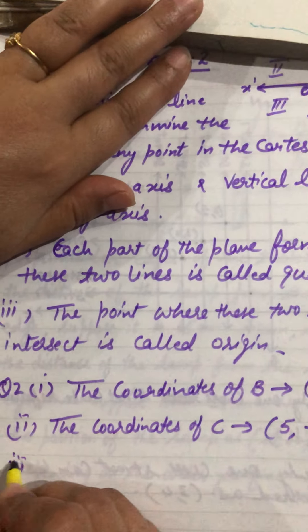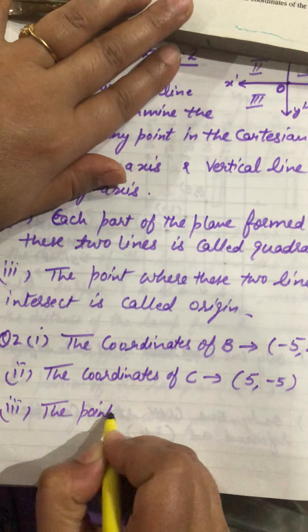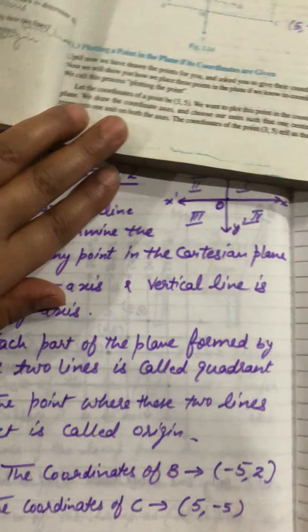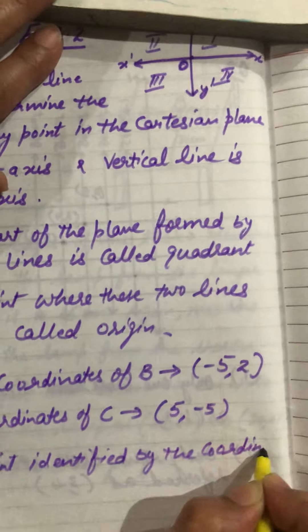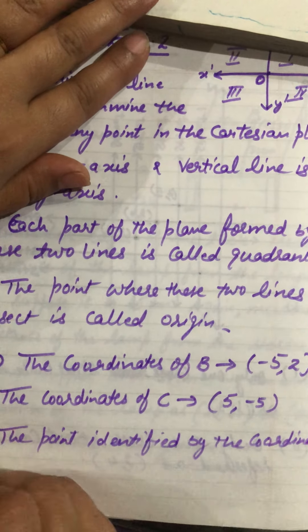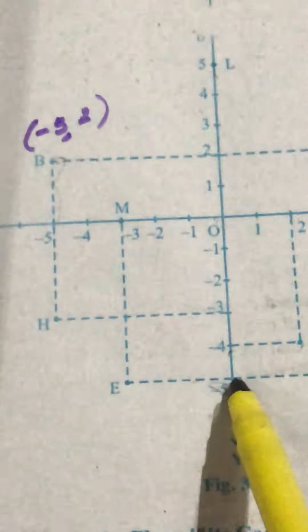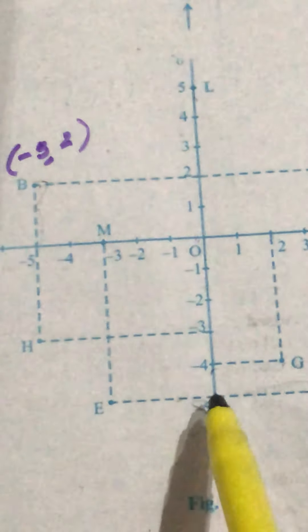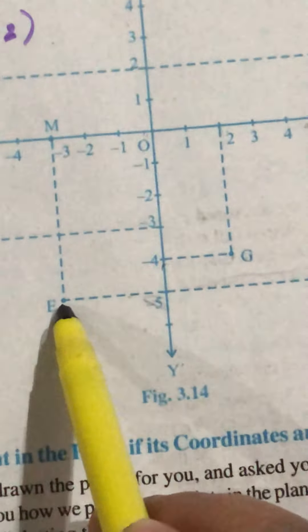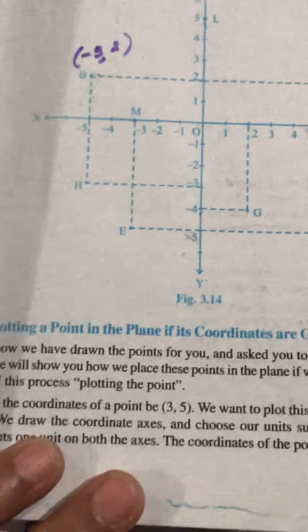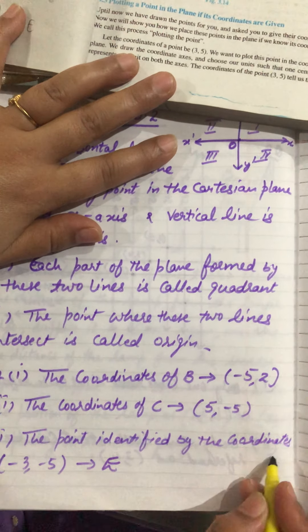Next part: the point identified by the coordinates (−3, −5). You can see here — x is at minus 3 and y is at minus 5. Both lines meet at point E. So the point identified by the coordinates (−3, −5) is E.